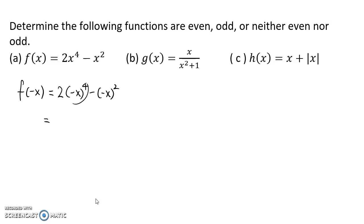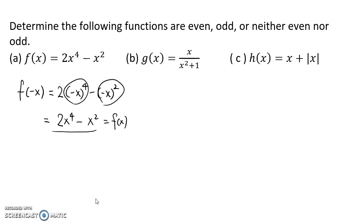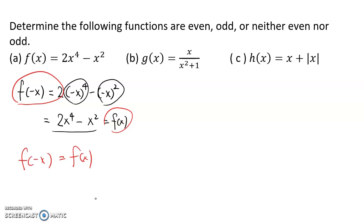We know negative x to the 4th is just x to the 4th, so we get 2x to the 4th. And negative x squared is just x squared, so minus x squared — and we get f of x back. So f of negative x is equal to f of x, which means this function is an even function.